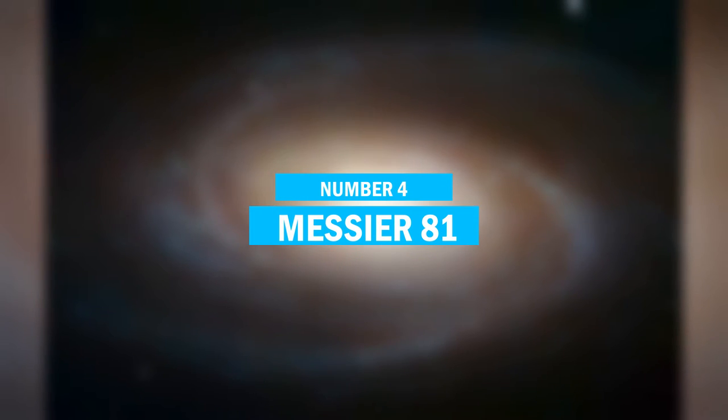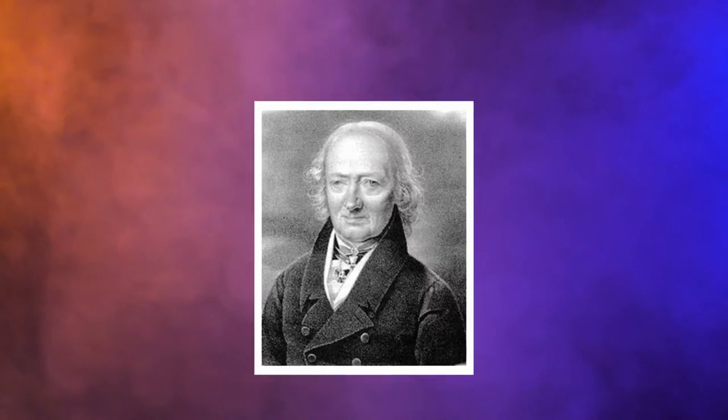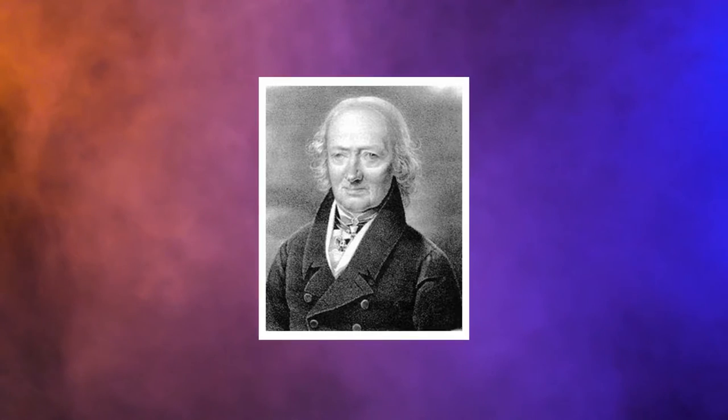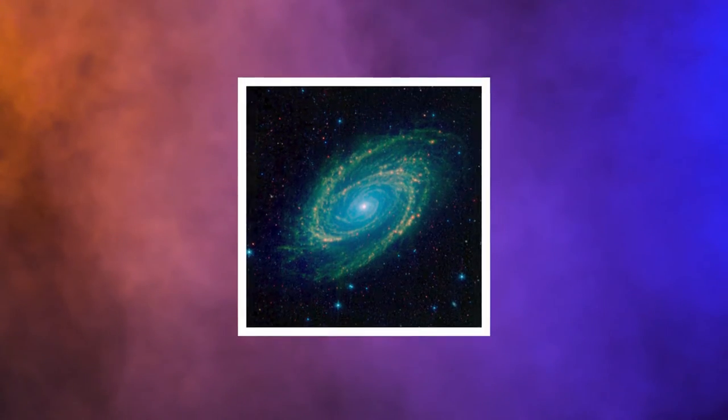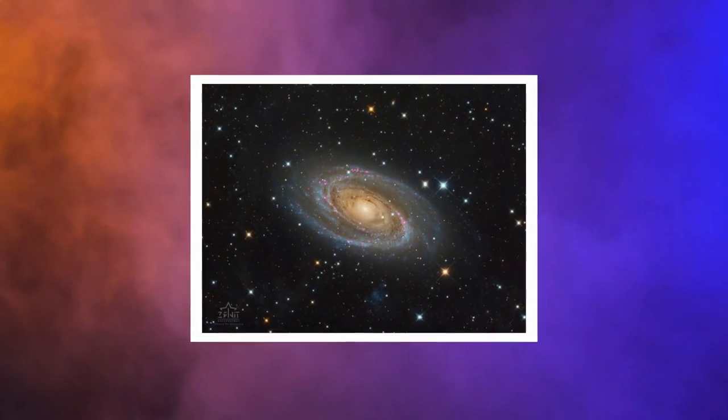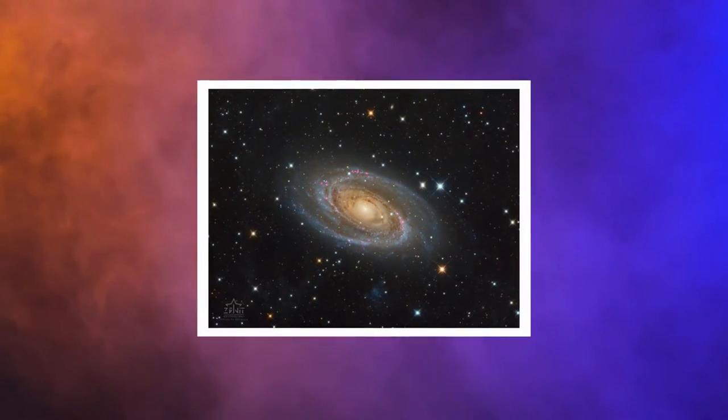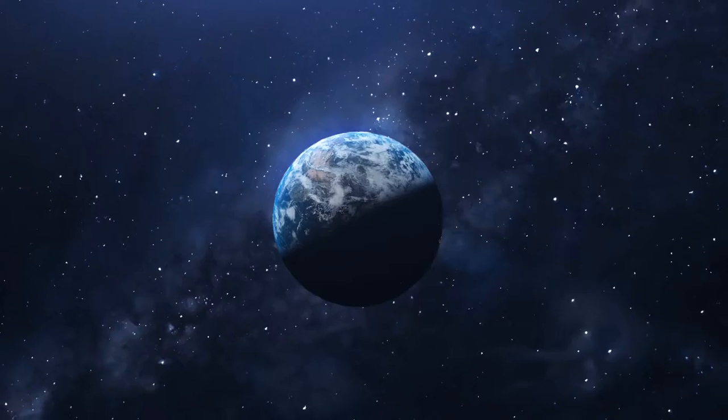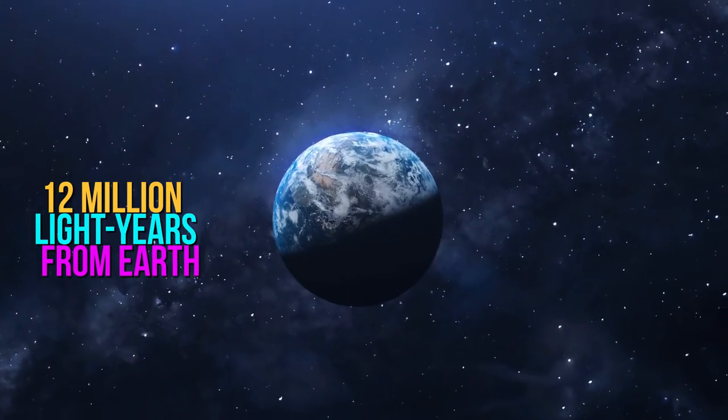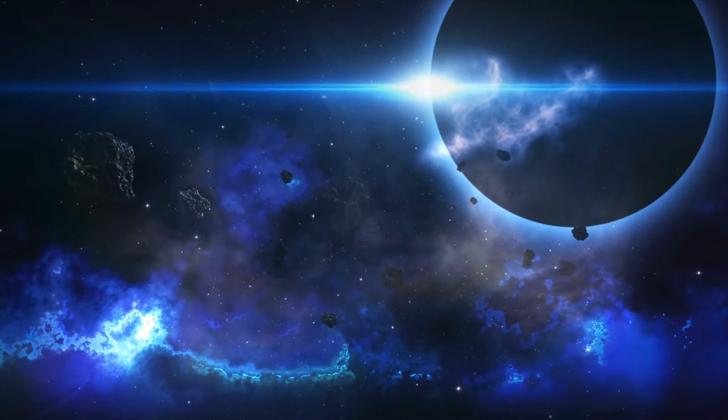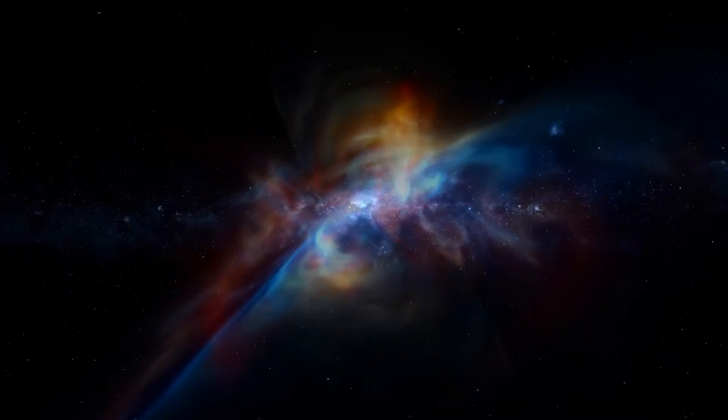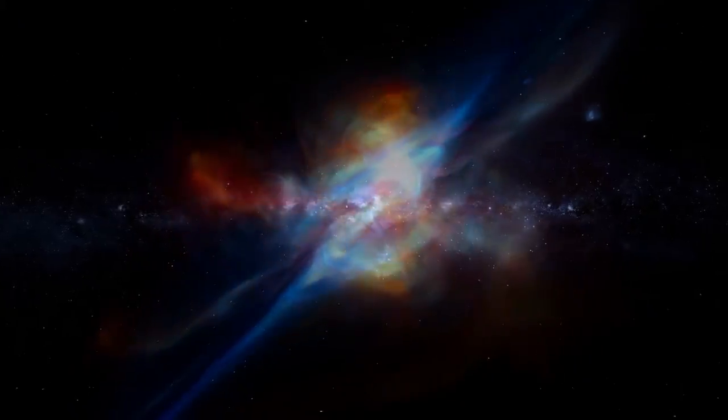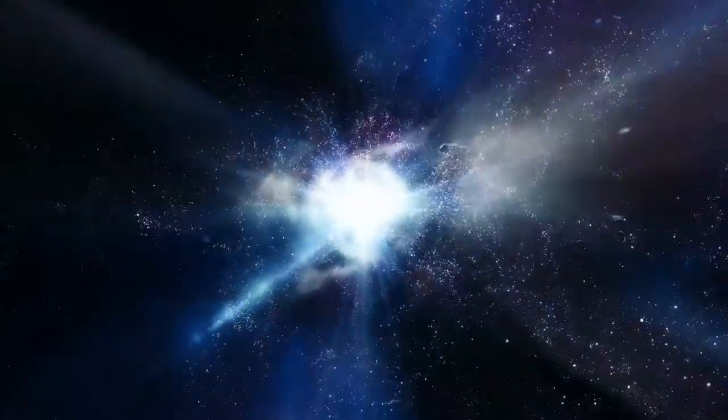Number 4. Messier 81. Johann Allert Bode discovered Messier 81 in 1774. The galaxy is also known as Bode's Galaxy. Messier 81 is one of the universe's largest and most stunning galaxies. It's located in the constellation Ursa Major, around 12 million light-years from Earth. In the galaxy's center, there's a bright nucleus. It also has majestic spiral arms and sweeping cosmic dust lanes which add to its allure and beauty.